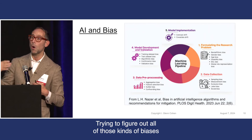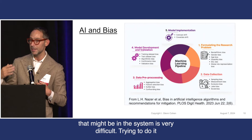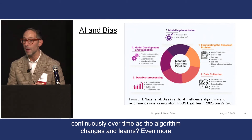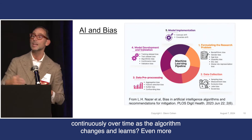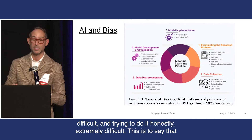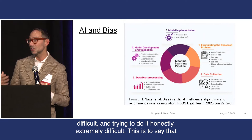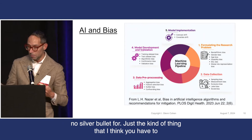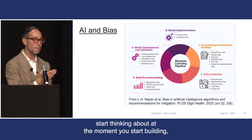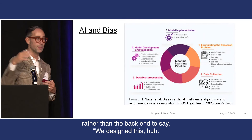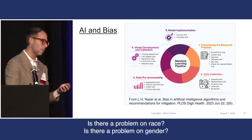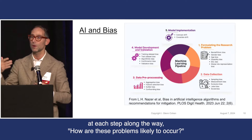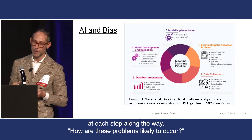Trying to figure out all of those kinds of biases that might be in the system is very difficult. Trying to do it continuously over time, as the algorithm changes and learns, even more difficult. And trying to do it honestly, extremely difficult. This is a persistent challenge, and one that I think there's no silver bullet for — the kind of thing you have to start thinking about at the moment you start building, rather than at the back end asking: is there a problem on race, gender, or age? Instead, think at each step along the way how these problems are likely to creep in.